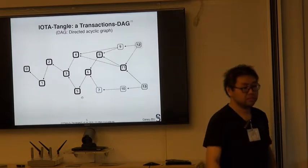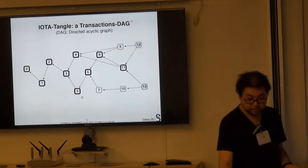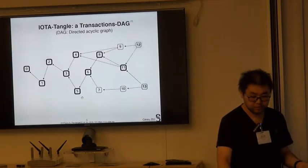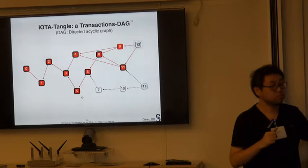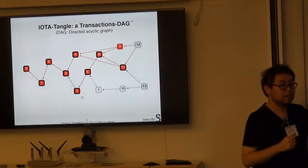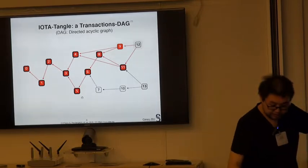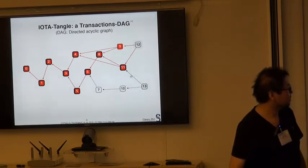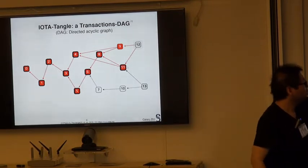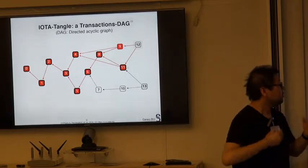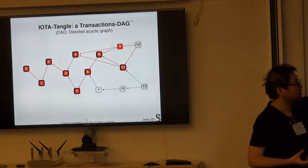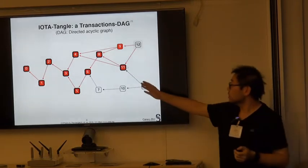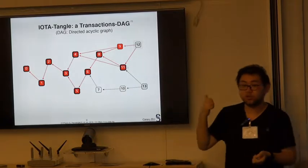IOTA is a DAG-based data structure, where every block is a transaction sent by the user. Every time a transaction wants to be added to the Tangle, it has to do something: it will choose two parents — for example, nodes 9 and 11 — and approve them and all the transactions before this transaction. So here we have a verification path. After the sender of the transaction verifies all these transactions, it can publish this transaction and says that it trusts all of these transactions.